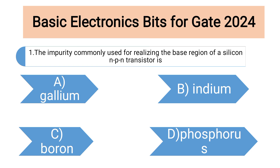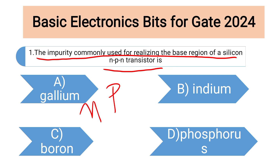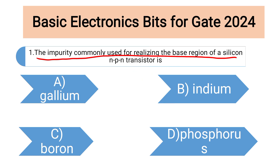Let us see the first bit. The impurity commonly used for realizing the base region of a silicon NPN transistor. For an NPN transistor, the base is nothing but P. The first N and last N are emitter and collector, and P is the base. We know for creating a P-type semiconductor we need to dope our intrinsic semiconductor with trivalent impurity.